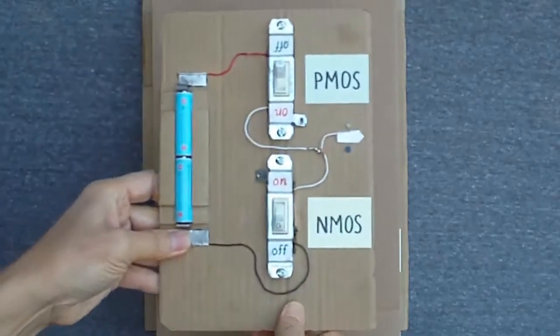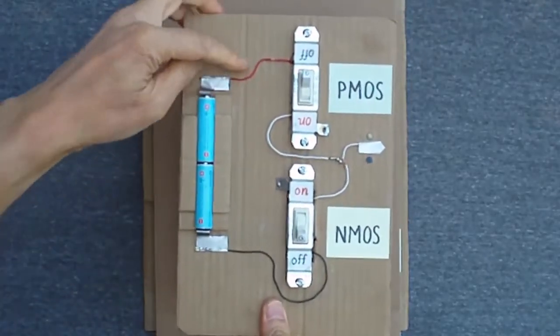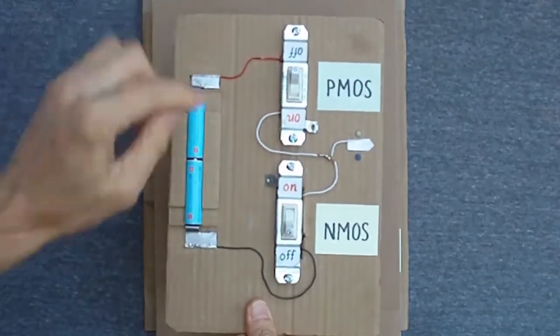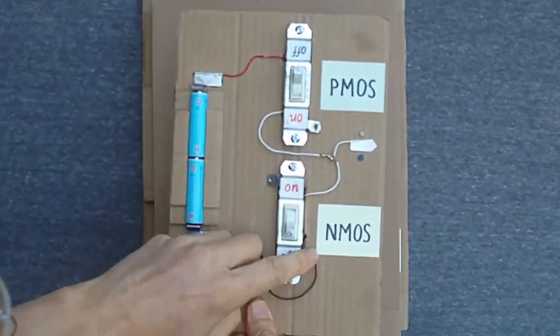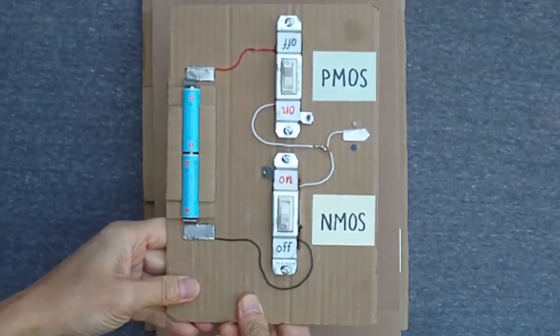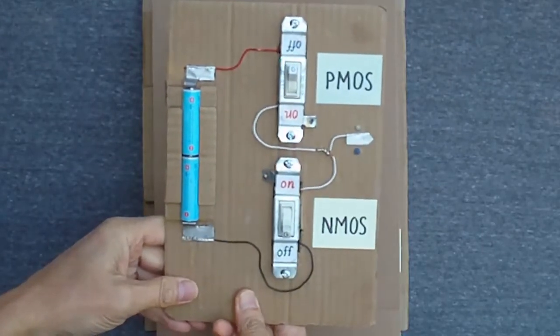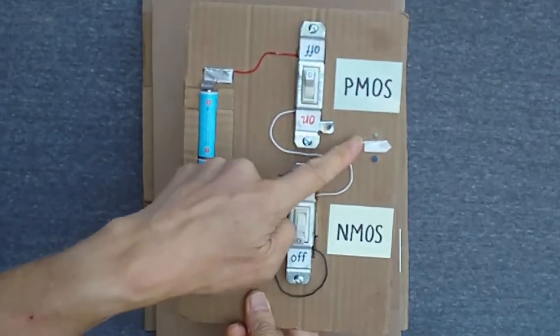Here is a model of a CMOS inverter. A high voltage is connected to the source of the PMOS transistor, and ground is connected to the source of the NMOS transistor. Right now, both transistors are off, so the transistor drains are floating or not connected to anything.